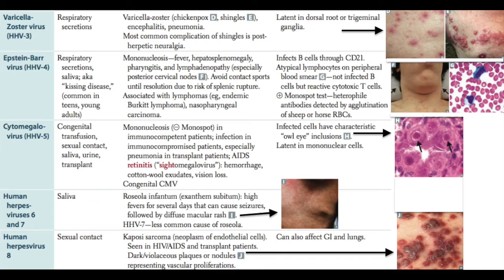Other members of the herpes virus family include EBV, CMV, HHV6, and HHV8. EBV causes infectious mononucleosis, is associated with Burkitt's lymphoma and nasopharyngeal carcinoma, and is transmitted through respiratory secretions and saliva. CMV causes congenital infections and mononucleosis with a negative monospot test — in contrast to EBV — and can cause pneumonia. Infected cells with CMV have characteristic owl's eye appearance. It's transmitted congenitally through the placenta, transfusion, sexual contact, saliva, or urine.